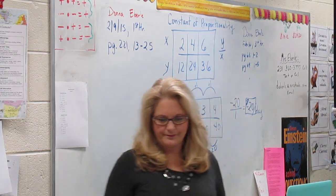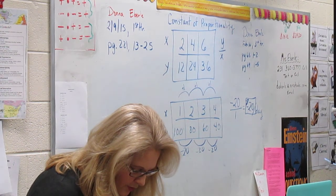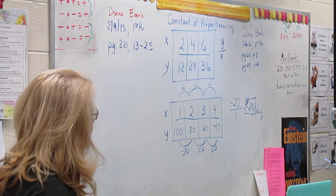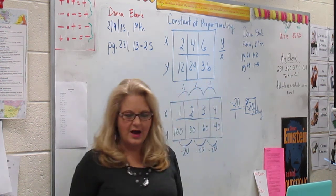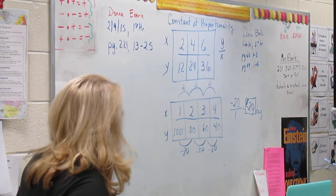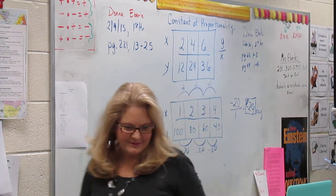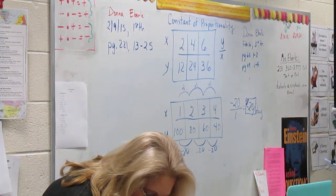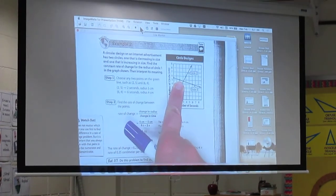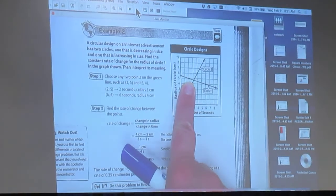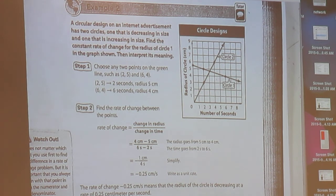We're going to turn the page to example 2. And if you look at example 2, what's the biggest difference between what we just did on the board and what you see in example 2? Yes. It's a graph. So we've learned how to find the constant proportionality from a table. Now we're going to work on how to find it from a graph. So let's look at step 1. Choose any two points on the green line, such as 2, 5, and 6, 4. Now, you can't tell which line is green, can you? So we're going to go ahead and look at any two points. So look at the two dots on this line and the two dots on that line. Why would they have made that particular location a dot? What's special about that spot? It's right on the intersection of a line. You always want to choose exactly the spot that intersects.